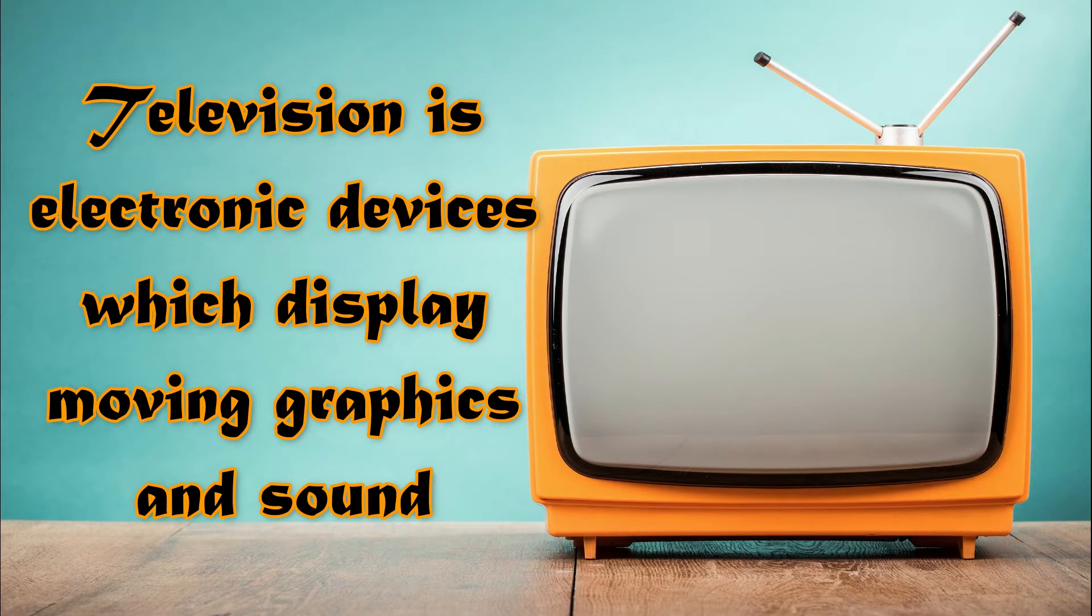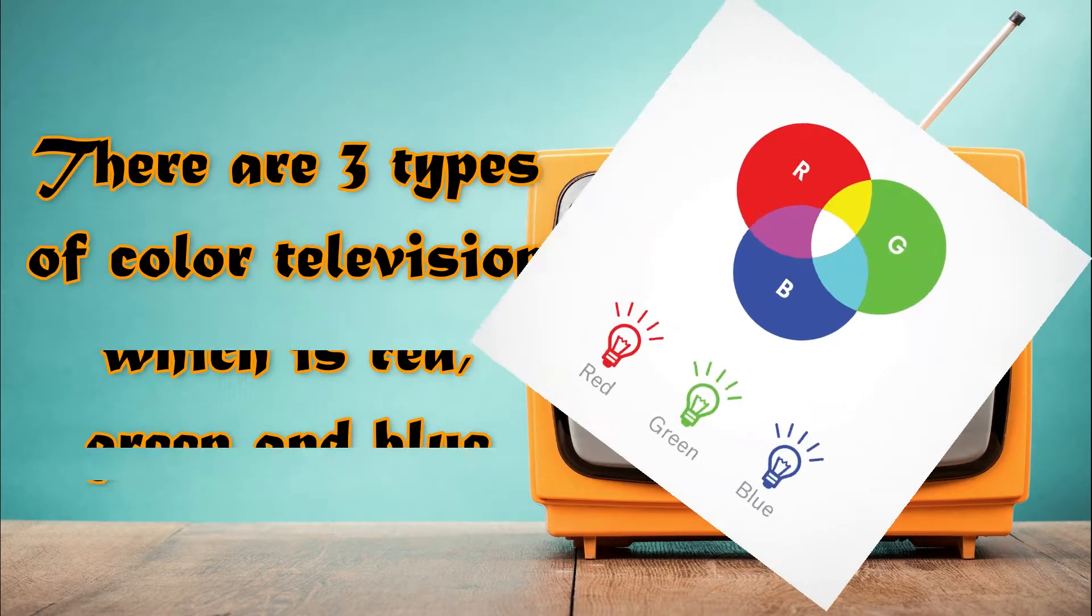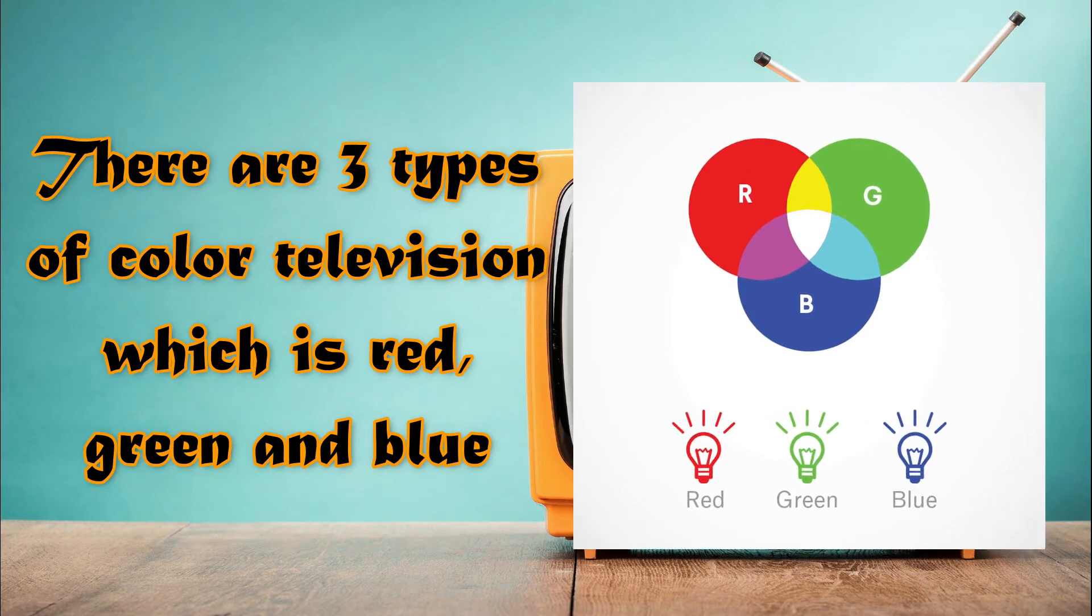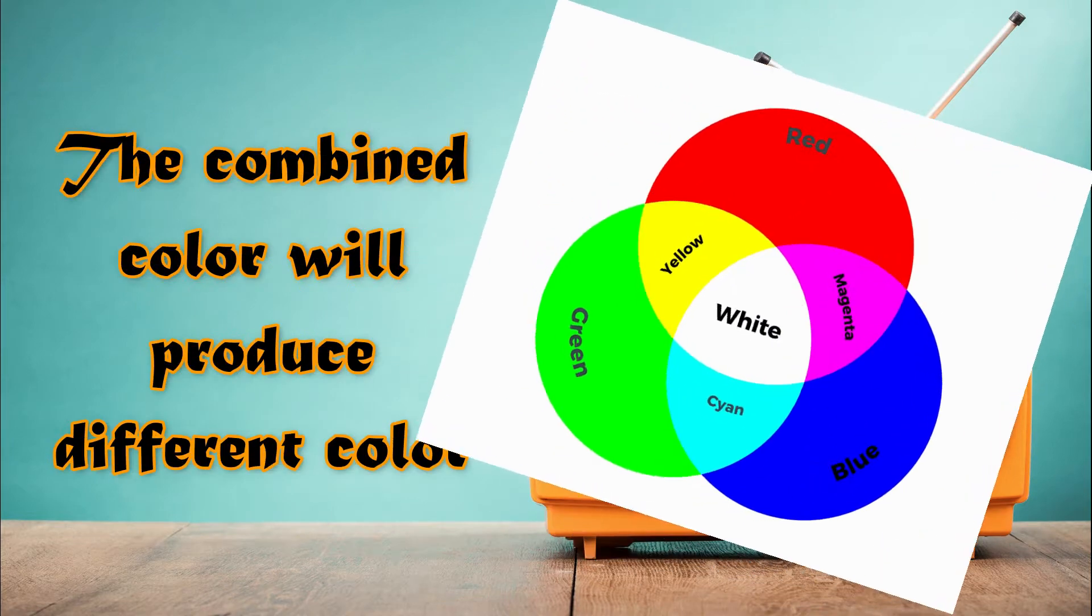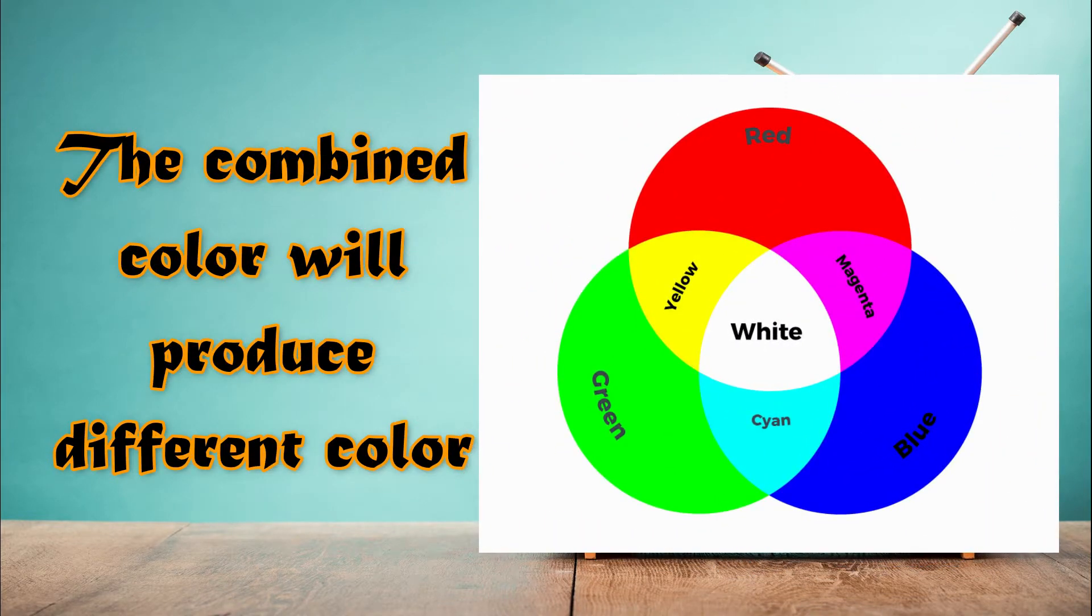Television is an electronic device which displays moving graphics and sound. There are three types of color in television: red, green, and blue. The combined colors will produce different colors.